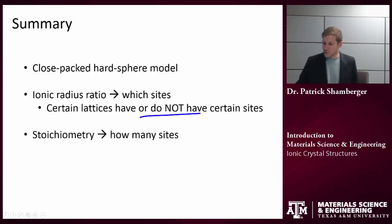Certain lattices do or do not have certain sites. For example, the BCC lattice does not have tetrahedral sites. If you found by the ionic radius ratio that the cations want to sit in tetrahedral sites, then those anions are not going to be coordinated in a BCC structure. Finally, we talked about stoichiometry, how many of the sites are occupied.